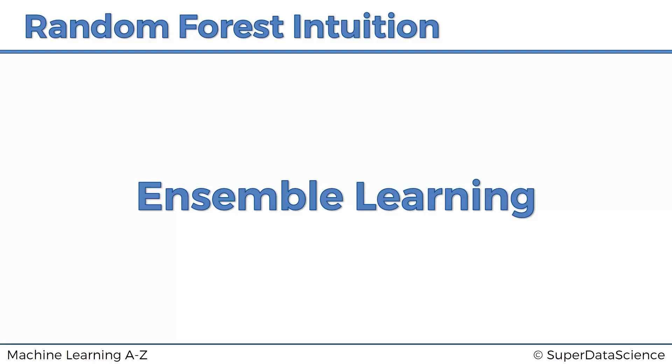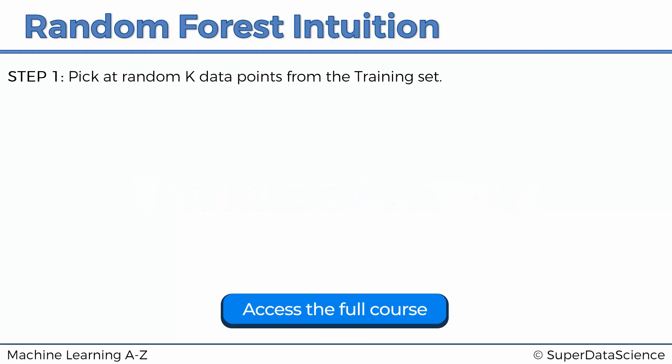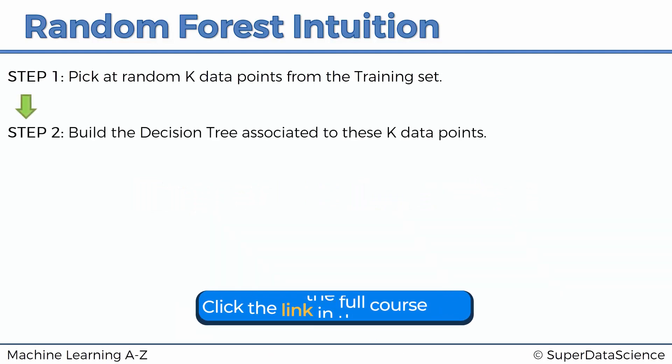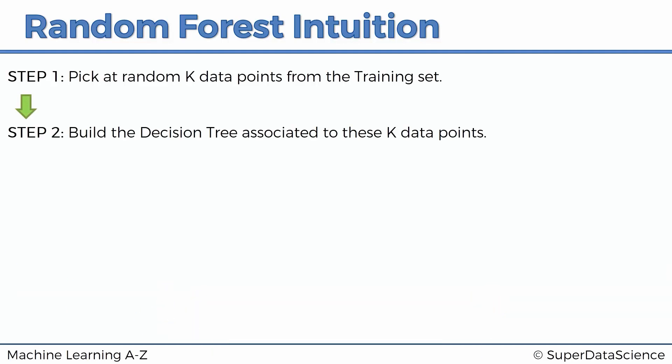Let's have a look at the step-by-step process to understand how all of this happens. Step one: you pick at random K data points from the training set. Then you build a decision tree associated to those K data points. So instead of building a decision tree based on everything in your dataset, you build it based on just a subset of your data points.